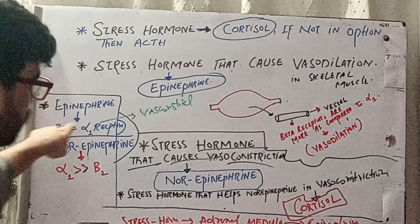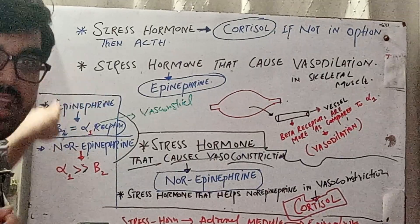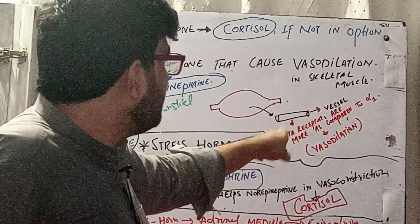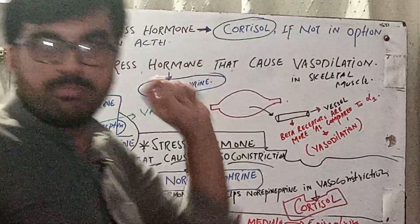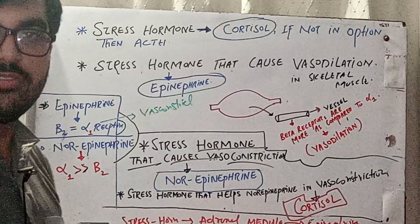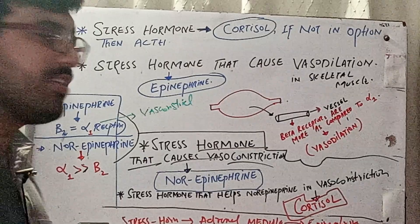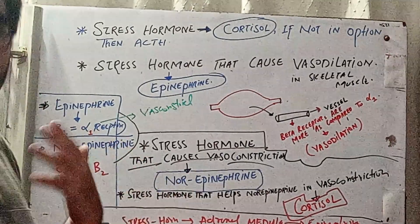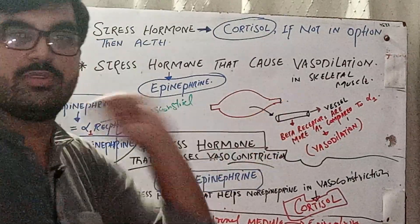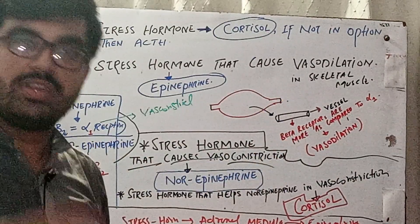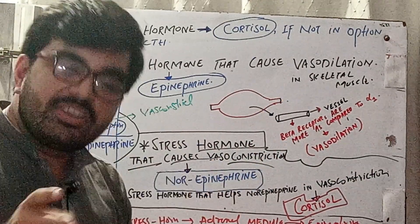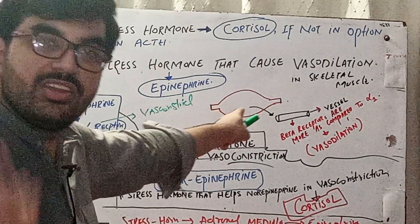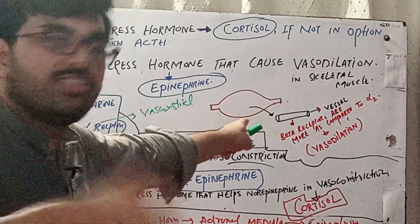If both receptor types are equal in quantity, it will neither constrict nor dilate a blood vessel. In the vessels of skeletal muscle, beta receptors are more than alpha receptors, so epinephrine will cause vasodilation in skeletal muscle. In vessels outside skeletal muscle, alpha receptors are more than beta receptors, so epinephrine is a vasoconstrictor outside skeletal muscle and a vasodilator inside skeletal muscle.